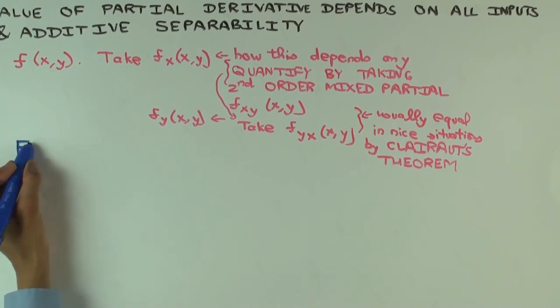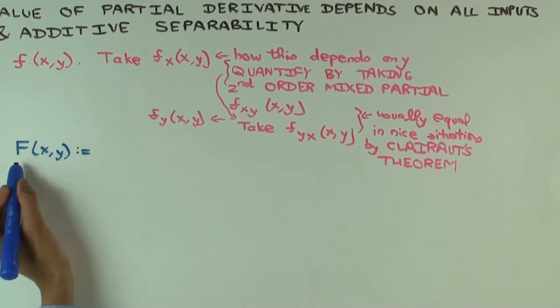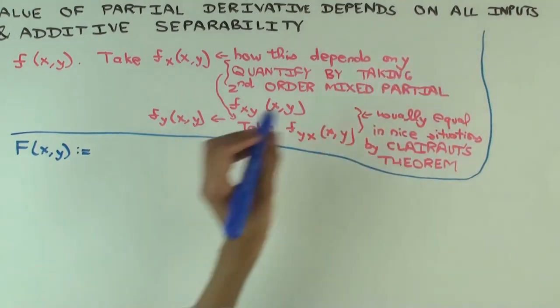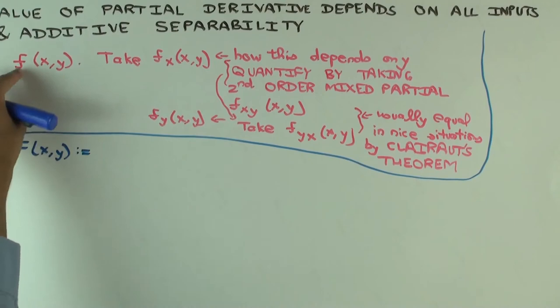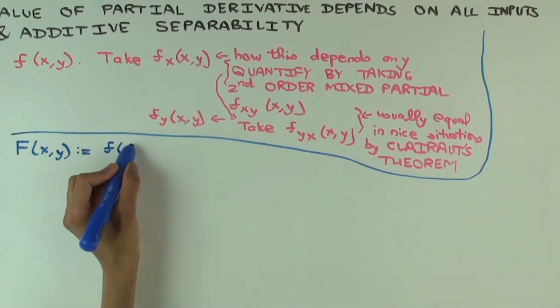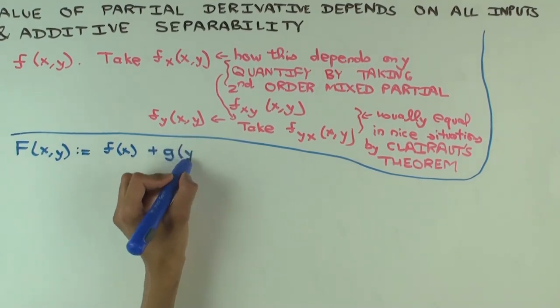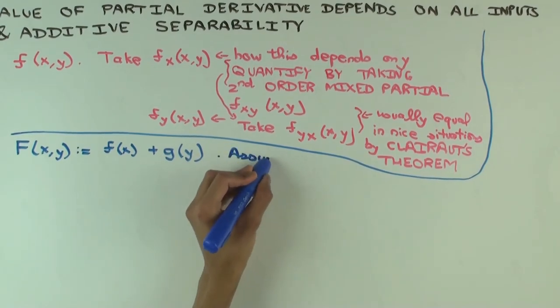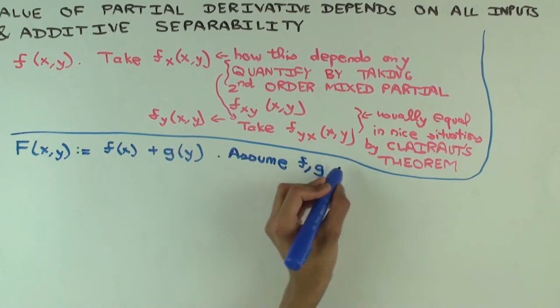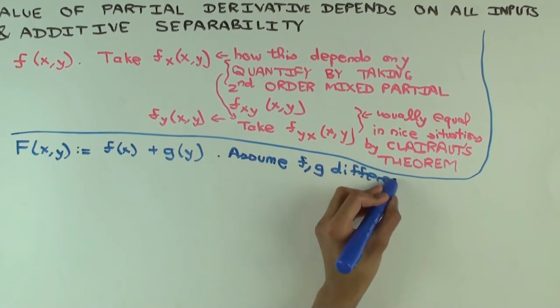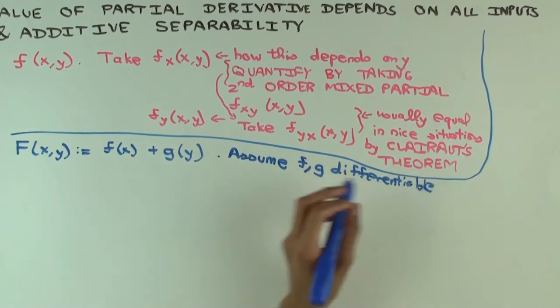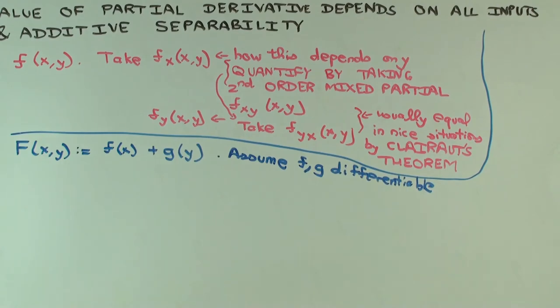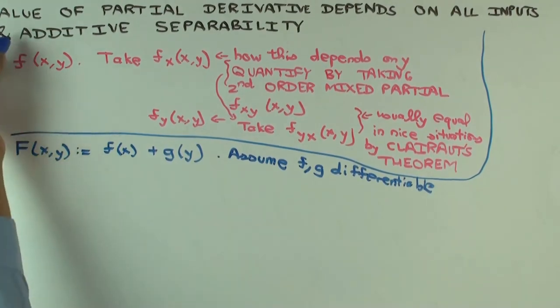Suppose I have a function. So by the way, I'm using capital F for the function now and I'll use little f for something else. I'll use little f for a function of one variable and little g for a function of another variable. And assume that f and g are differentiable. What is this kind of a function called where you can write it as a sum of functions of each of the variables? Additive, separable. So this is an additively separable function.